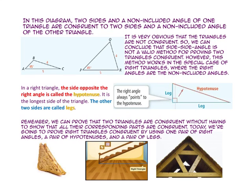In this diagram, two sides and a non-included angle of one triangle are congruent to two sides and a non-included angle of the other triangle. It is very obvious that the triangles are not congruent. So we can conclude that side-side-angle is not a valid method for proving two triangles congruent. However, this method does work in special cases of right triangles, where the right angles are the non-included angles.